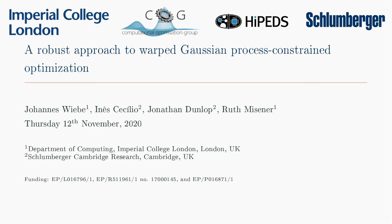Today, I'd like to talk about how robust optimization can be applied to optimization problems containing uncertain black box constraints modeled by warped Gaussian processes. The work I'm presenting is the work of my supervisor Ruth Meissner, our collaborators Inesh and Jonathan from Schlumberger Cambridge Research, and myself.